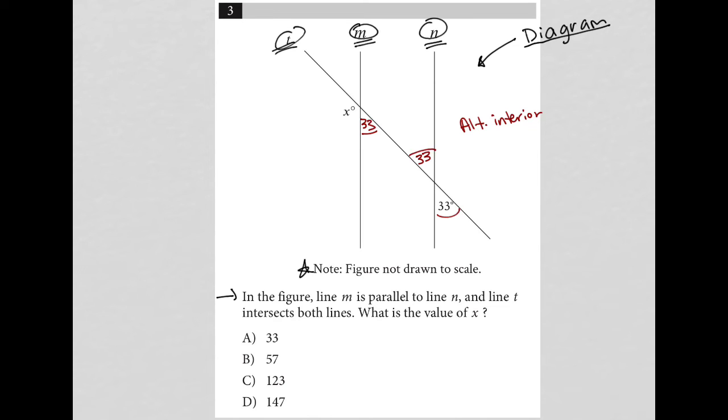And the wording of that should make sense. They're on alternate sides of the transversal, but they're both interior to the parallel lines. And alternate interior angles are congruent, right? They're the same.